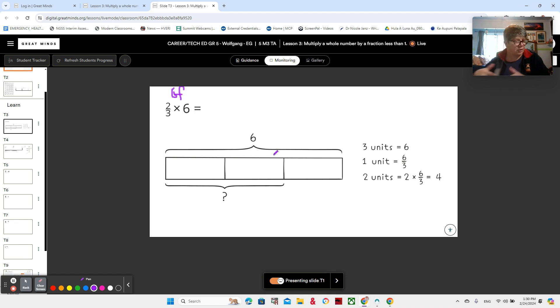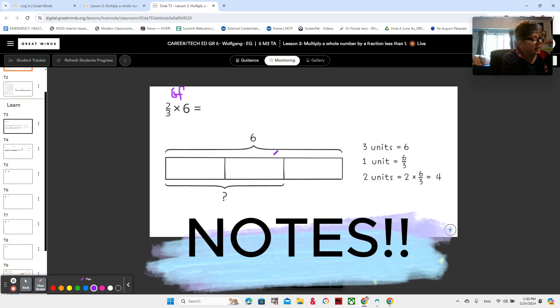Now, could you please take notes for this on page 23, which would be the page between your two sprints there? Or you could also do it on the bottom of your sprint page. Please take notes by writing down what we have written here. Write down two thirds times six. Draw the tape diagram. Write everything that you have on the screen. If you need more time, feel free to pause me.